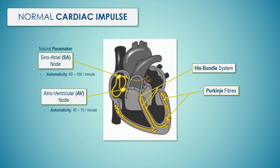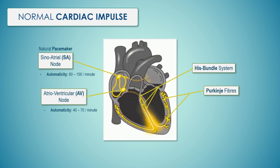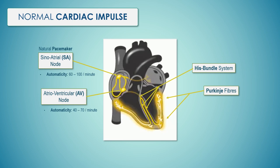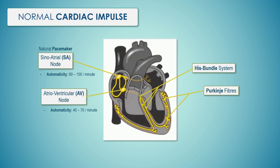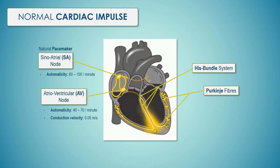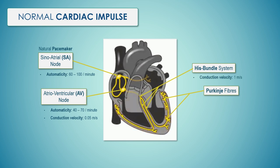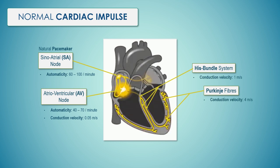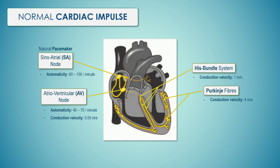Because it has the fastest intrinsic automaticity rhythm, the SA node acts as a pacemaker and is the usual site of initiation of the cardiac electrical impulse. During the normal heartbeat, the impulse rapidly depolarizes both the left and right atria as it travels to the AV node. Conduction velocity slows from one meter per second in atrial tissue to 0.05 meter per second in nodal tissue, and this delay allows enough ventricular diastolic filling time. After the delay in the AV node, the impulse moves rapidly down the His bundle at one meter per second and then Purkinje fibers at four meters per second to simultaneously depolarize the right and left ventricles.